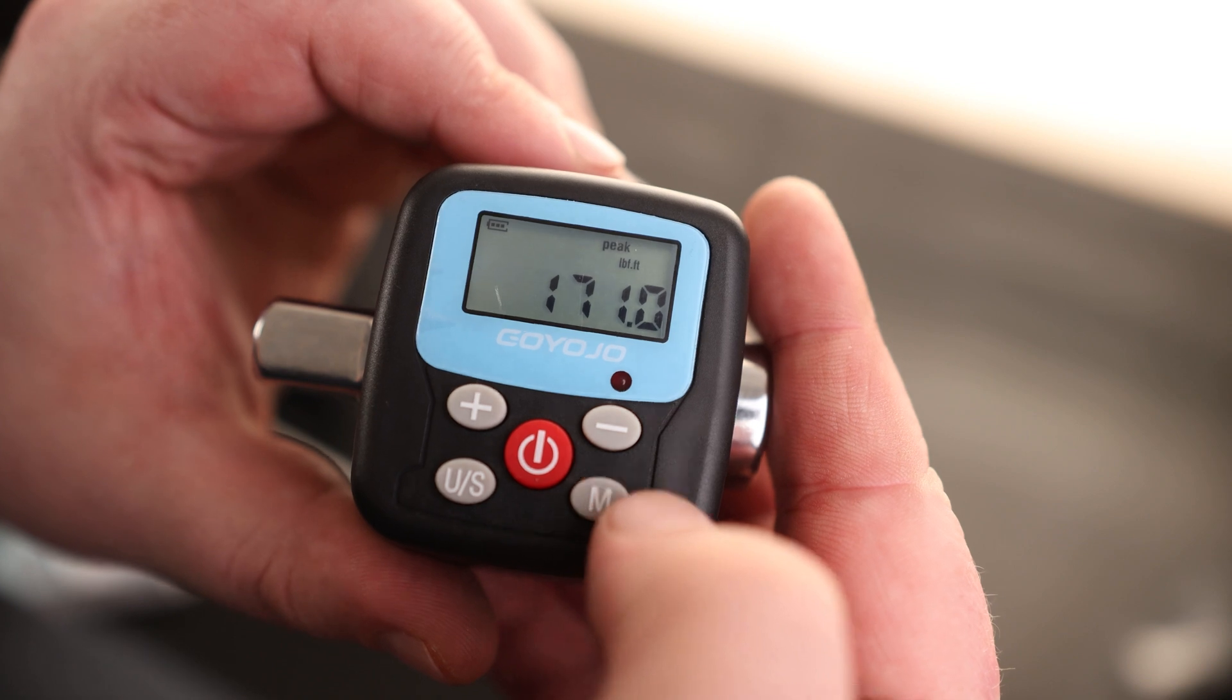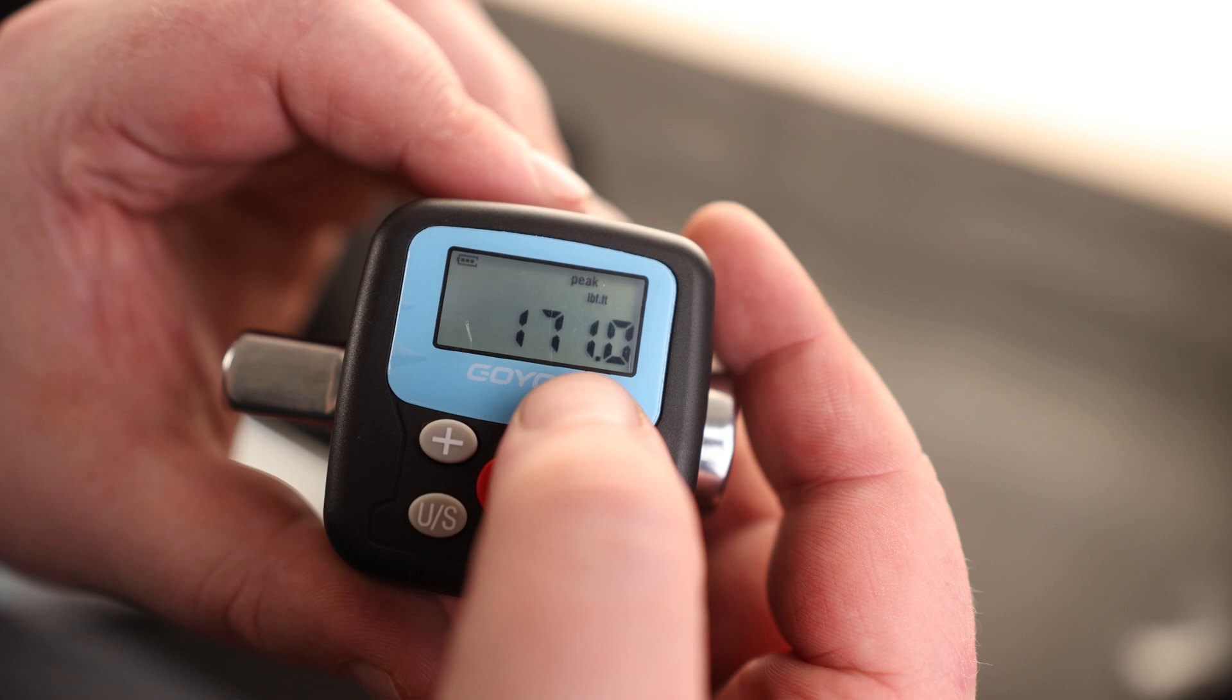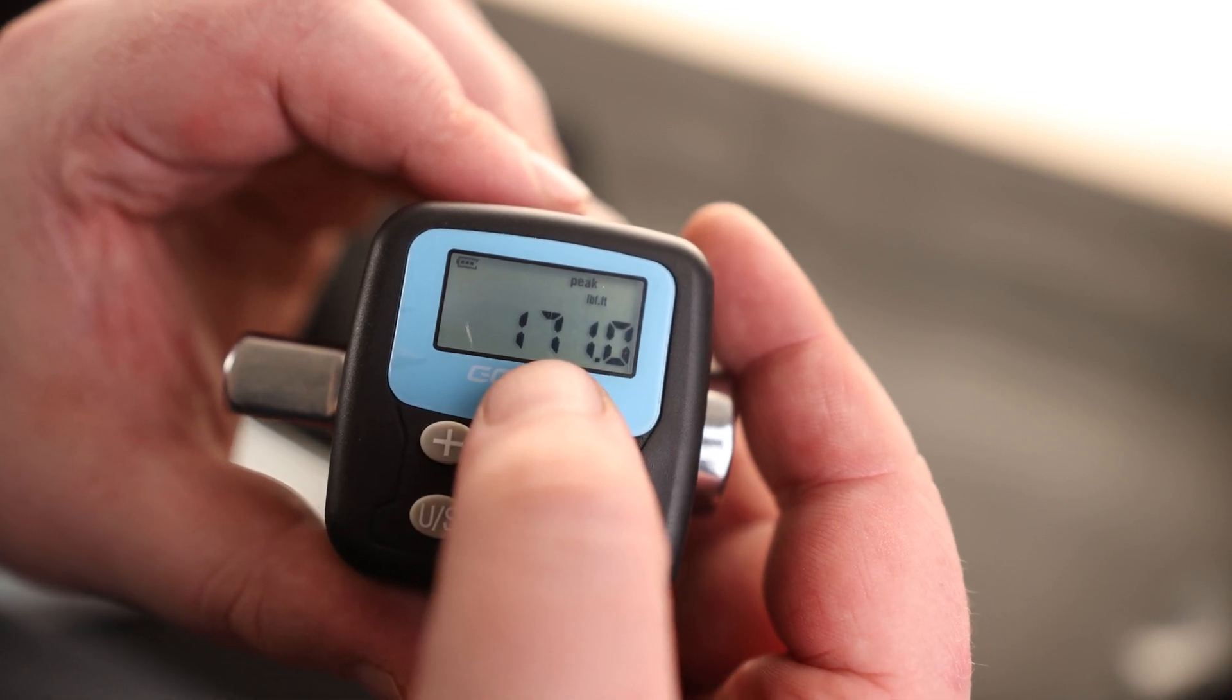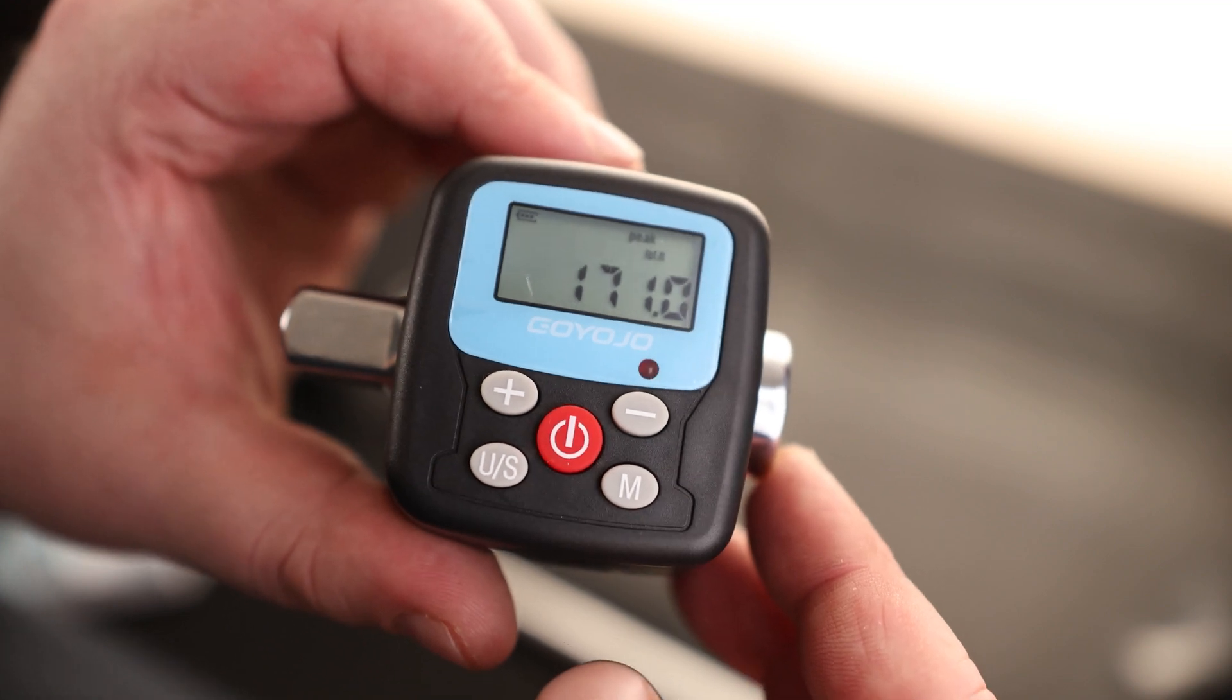If I hit M, we can change the mode to peak mode. Track mode is going to update the display and tell us exactly where we're at at that moment. Peak is going to tell us the maximum that we were at. So that way, if we have to take a torque measurement but we can't actually see the display, we can see what it was when we stopped.